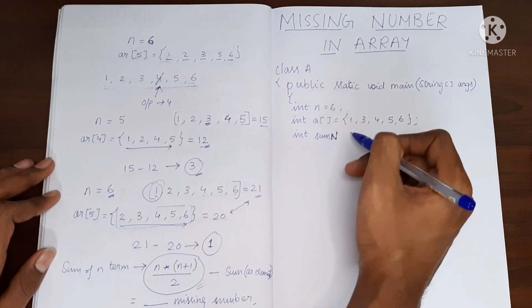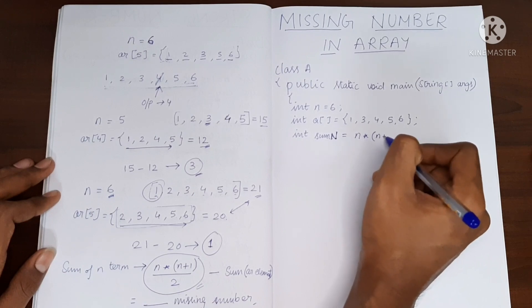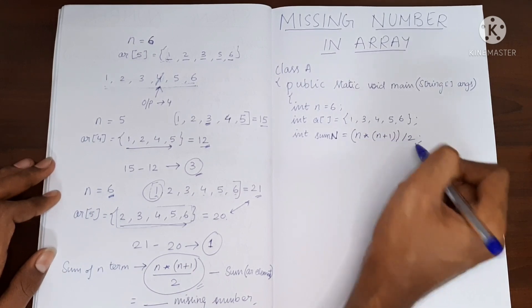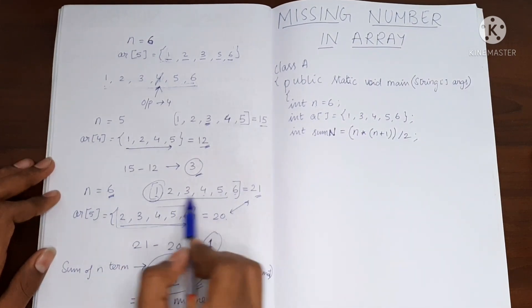Let's create a variable called sum of n numbers. So let's call it sum_n, and it will be equal to n into n plus 1 whole divided by 2. So this will give you the sum to n numbers, this sum which we calculated.